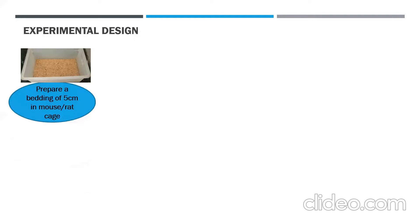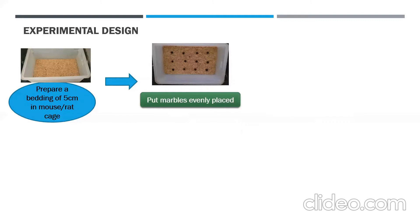The condition required for this experiment is that it should be performed in a noise-free and dark environment. First, you have to put bedding into a cage — that should be five centimeters of bedding. Then keep the marbles evenly placed into the bedding. There is a lot of variation in the number of marbles as well as the distance or placement of marbles at different levels, and this varies from researcher to researcher — you can standardize this in your own lab.